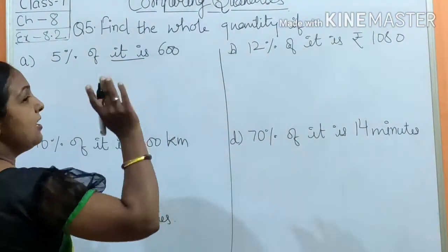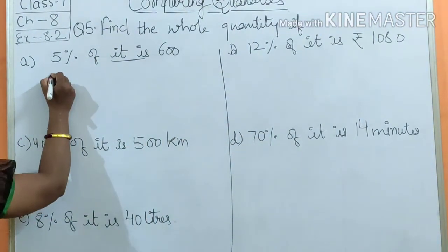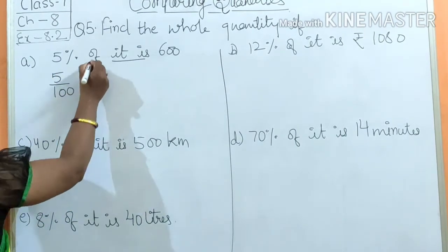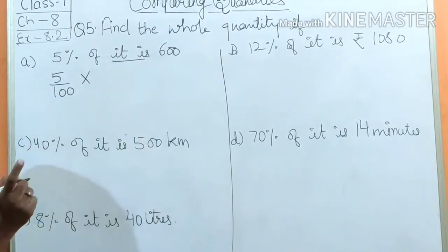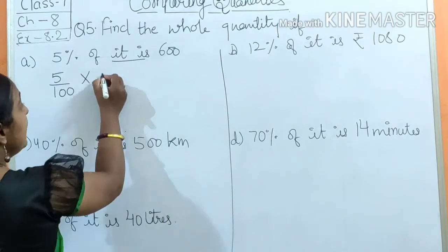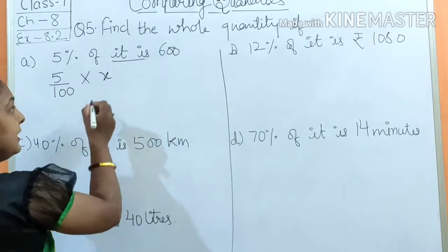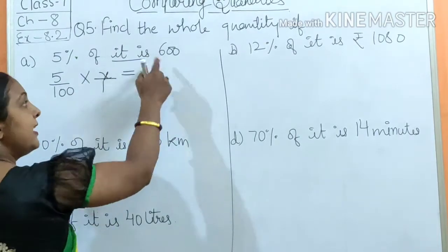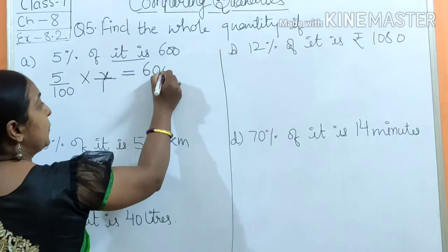Okay, so 'it is' means x. Now pay attention: 5% means 5 upon 100, of means multiplied, and it is unknown quantity, so I found x for it, upon 1, and is means equals to, equals to what? Equals to 600.